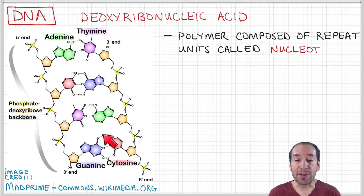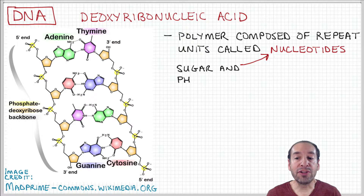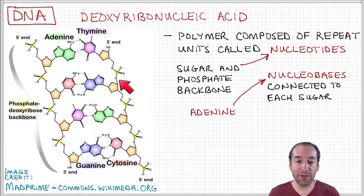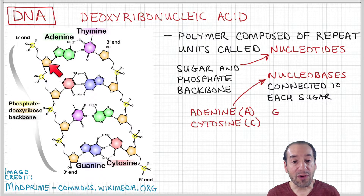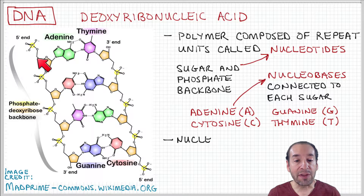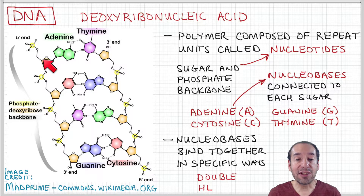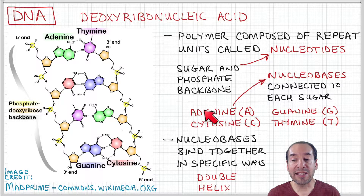This molecule is a long chain molecule composed of repeat units called nucleotides, and these nucleotides have a more complex chemical structure than some of the synthetic polymers we've talked about so far. There are two main parts: there's a sugar-phosphate backbone, shown here in the orange and highlighted areas, which forms the backbone structure of the polymer. Attached to that backbone as side groups are what are called nucleobases, connected to each of these orange sugar groups. There are four different nucleobases: adenine, cytosine, guanine, and thymine.